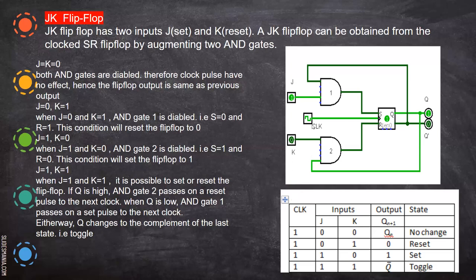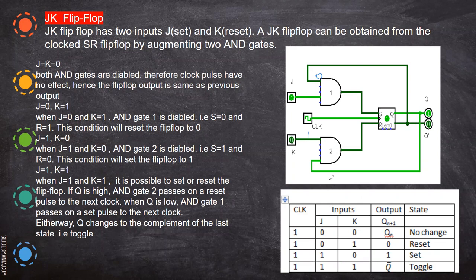During the positive clock pulse, when J is zero and K is one — for an AND gate, if any one of the input is zero, that gate will be disabled. So the J gate is disabled. Whatever may be the previous state, if the previous state is one, that will feed back and R will be one. So it is reset — S will have zero and R will have one, which is the reset condition.